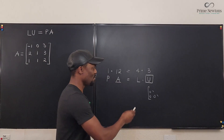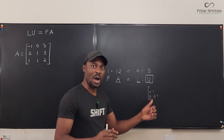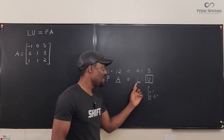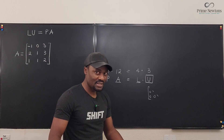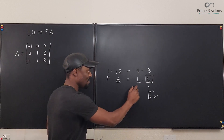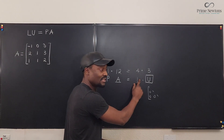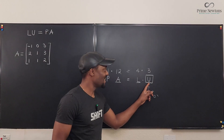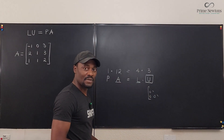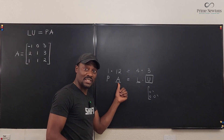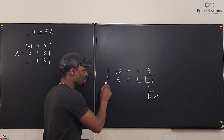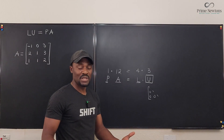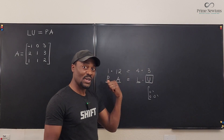You would ask me, then what is L? Just as U is upper triangular, L is the lower triangular matrix simultaneously generated from the elementary row operations we're going to be performing. If you multiply the lower triangular matrix by the upper triangular matrix, you're going to get your original matrix back.